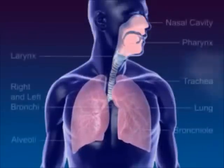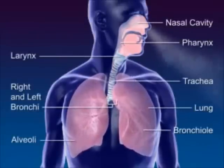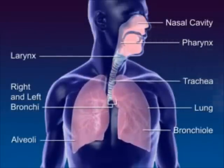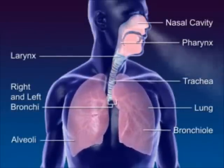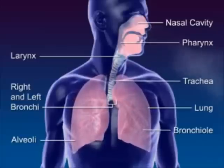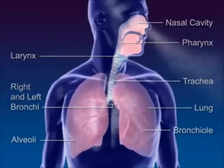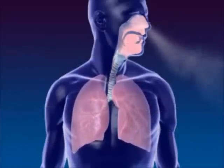The respiratory system moves air through the nose, pharynx, larynx, trachea, and bronchus to the alveoli, where the gas exchange between oxygen and carbon dioxide occurs.